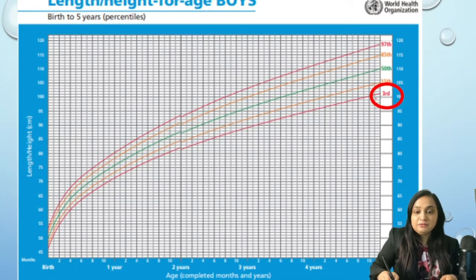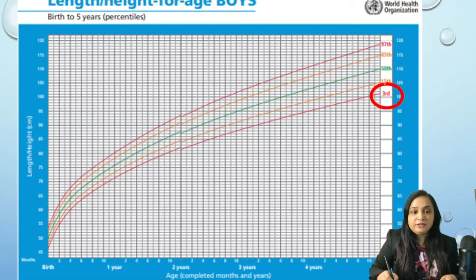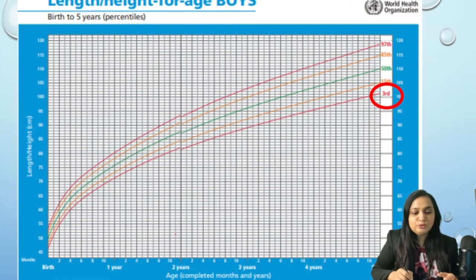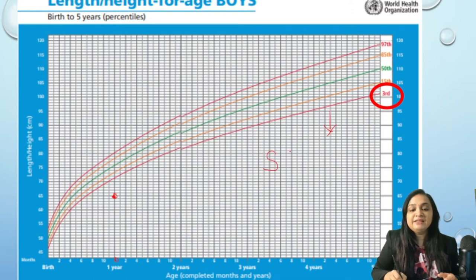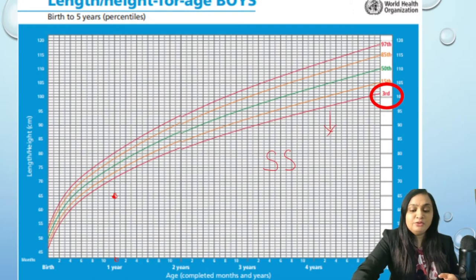These charts are available for reference. For example, if we have a child who is one year of age and his height is around 65 cm, then it is definitely below the third centile and we are dealing with a child who is suffering from short stature.